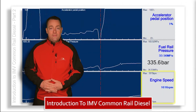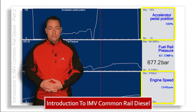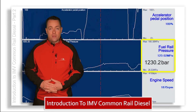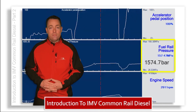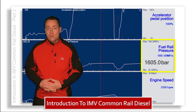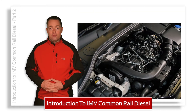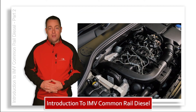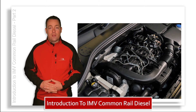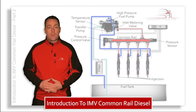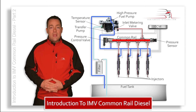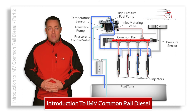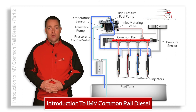When the engine speed and load is greater, a higher pressure is required. Depending upon the system, the pressures at full engine load may be as high as 2500 bar. So let's look at how the pressure in the rail is controlled.